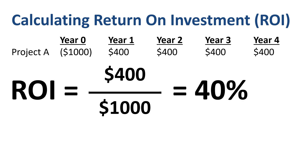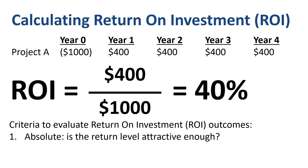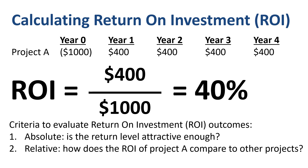Now that we have calculated that ROI outcome, is this a good or a bad number? You can look at this in absolute terms — maybe the company has a minimum requirement of 30% ROI for projects, and the ROI on project A exceeds that minimum. You could also look at this in relative terms. Maybe there are many other project proposals with ROIs that are 50% or higher, in which case project A might not be the most attractive and other projects might get higher priority.